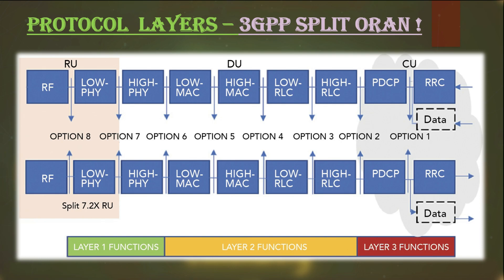The basic idea of the 7.2x split is to separate the higher physical layer from the lower physical layer. After this split, the lower physical layer will be near the radio unit and the higher physical layer near the distribution unit. This reduces the radio unit size and eases the deployment process.